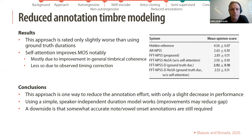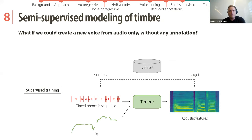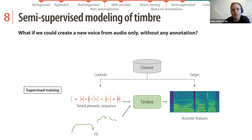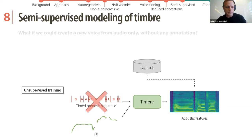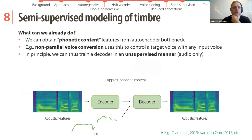This leads to our final work: semi-supervised modeling of timbre. The question is: what if we could create a new voice from audio only, without any annotations? We want to go from supervised training — where we have controls and targets from the dataset — to unsupervised training where we only have acoustic data. We can obtain phonetic content features from an auto-encoding bottleneck using vector quantization or self-supervised training, and this technique is used a lot in non-parallel voice conversion.